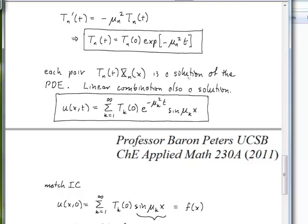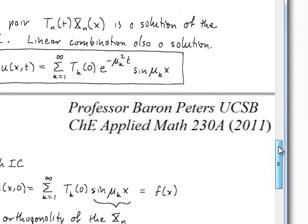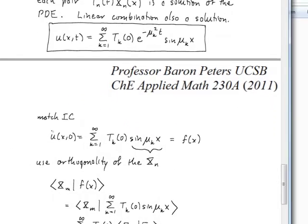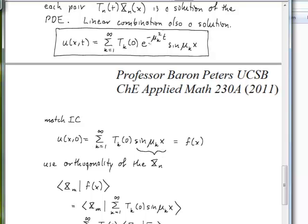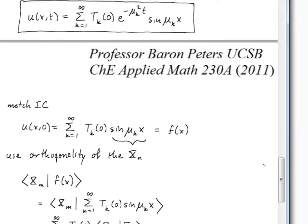Every pair of eigenfunction and time variable is a solution to the PDE, describing different eigenmodes. By linearity, any linear combination is also a solution, so we write the full solution as a sum of eigenfunctions multiplied by time-dependent coefficients. Substituting t equals zero, the exponential terms vanish, and we match against the initial condition u(x, 0) equals f(x).